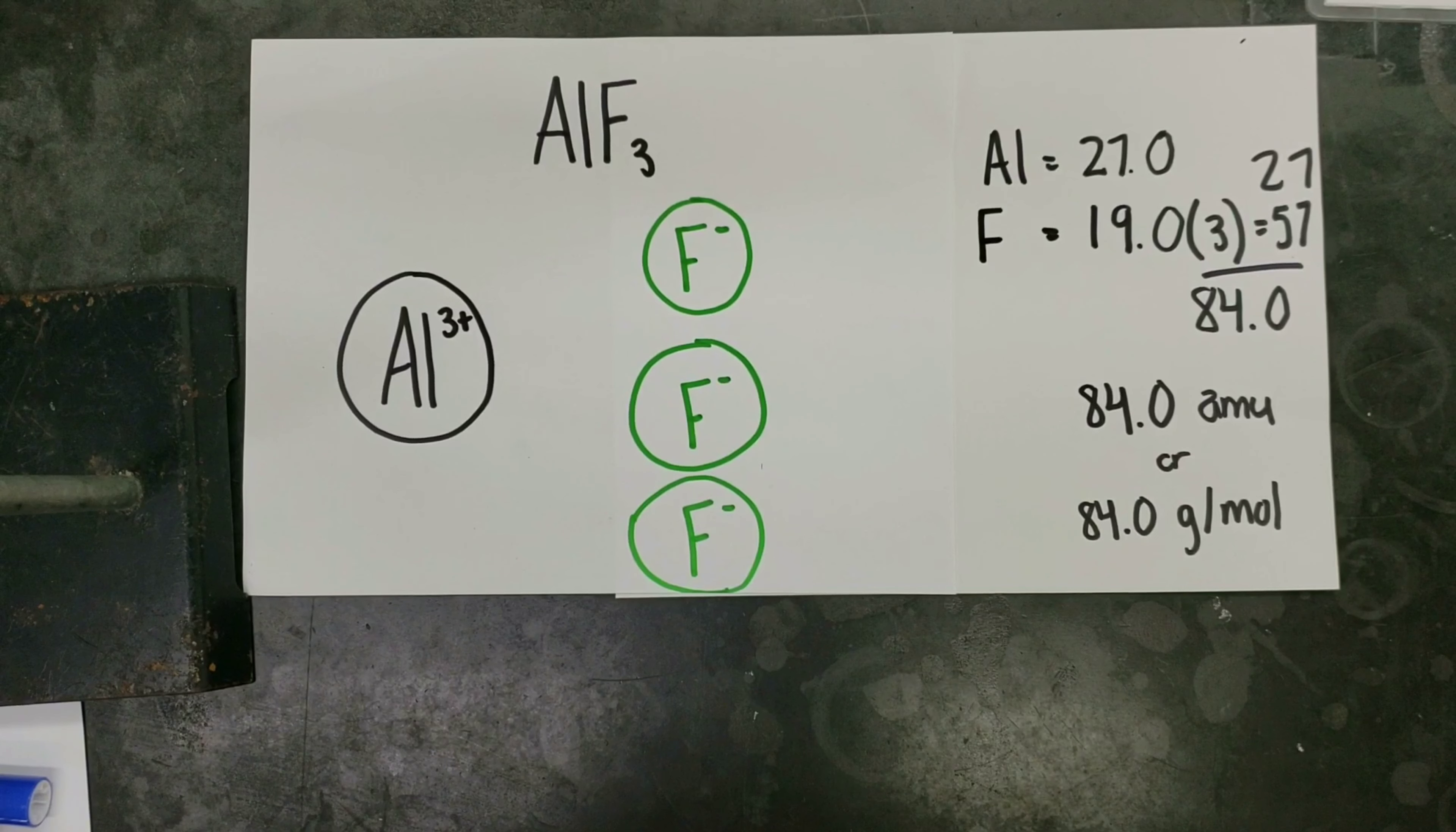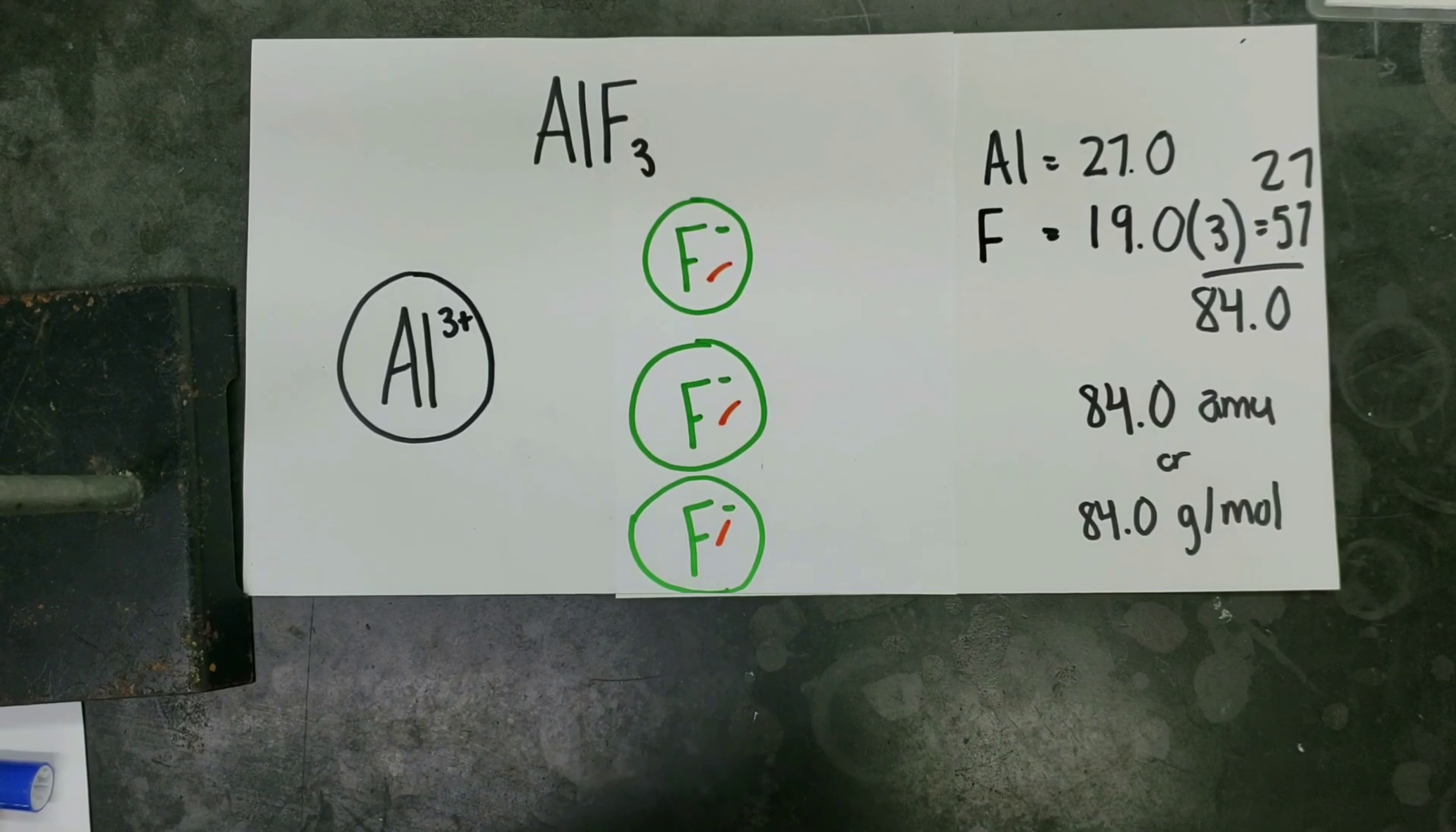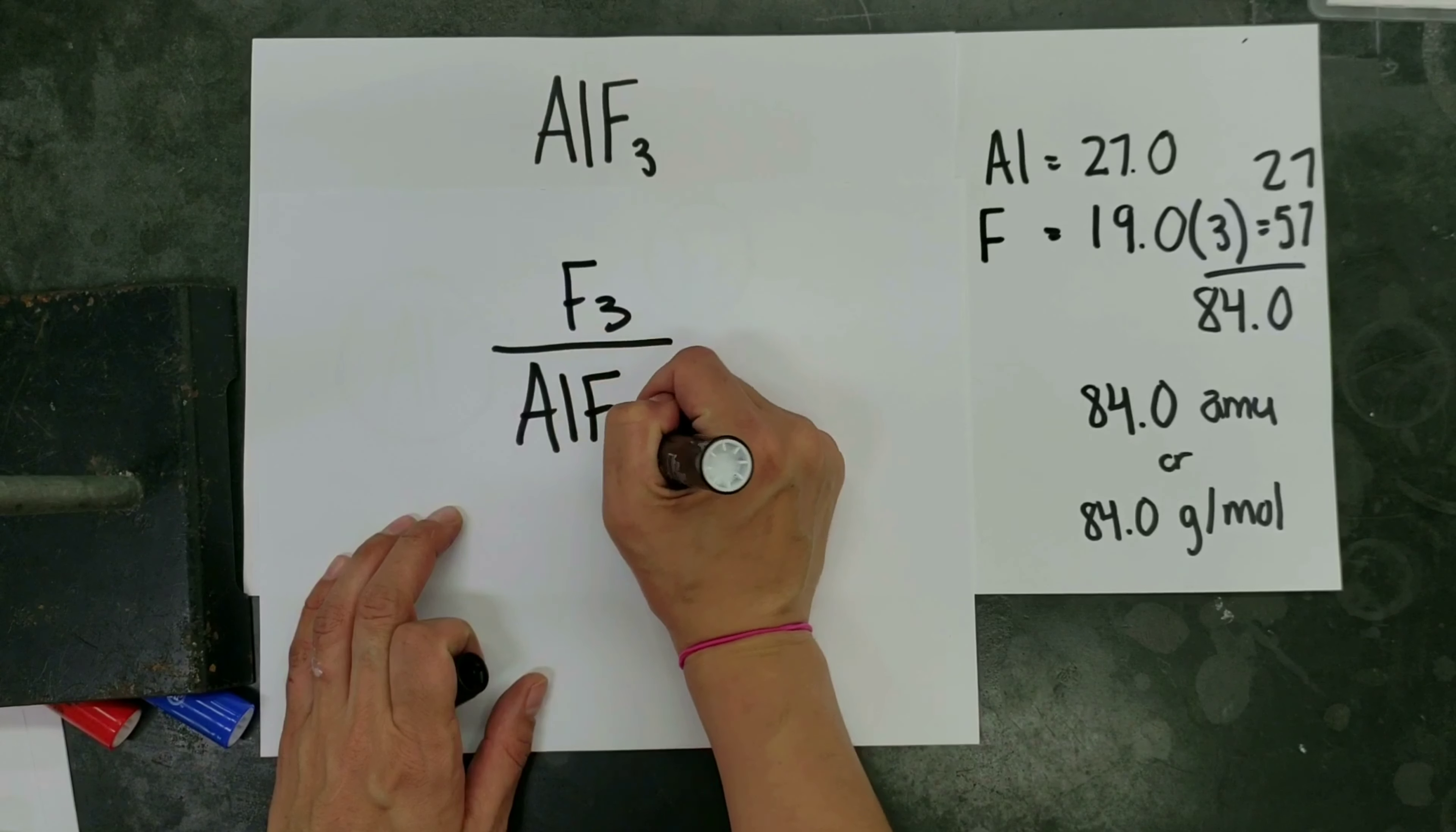In this example, we are asked to find the percent by mass of fluorine in aluminum fluoride. Basically, we're asking, in this ionic formula unit, how much of the mass is attributed from these three fluorine ions? Now, in the previous lesson, we calculated the gram formula mass of aluminum fluoride. We can use this information to help us find the percent by mass of fluorine in aluminum fluoride. So essentially, we're looking for the mass of our three fluorines and dividing it by the total mass of the compound times 100.